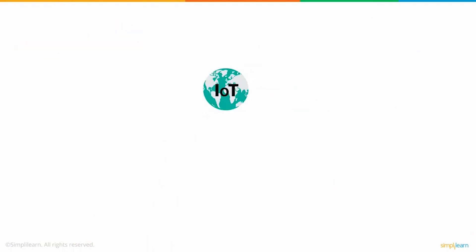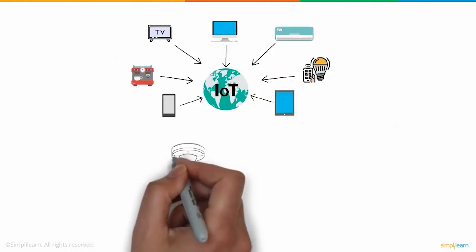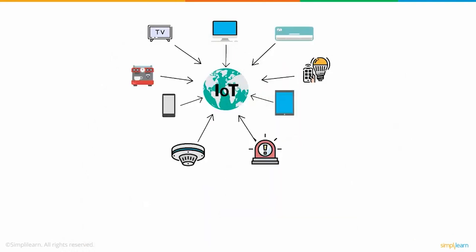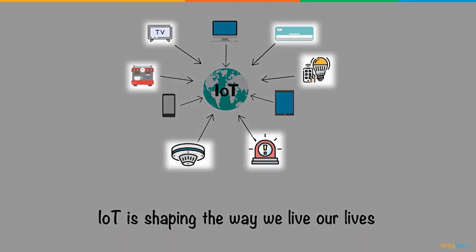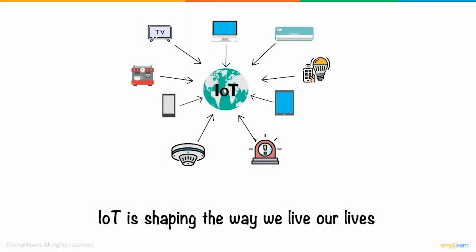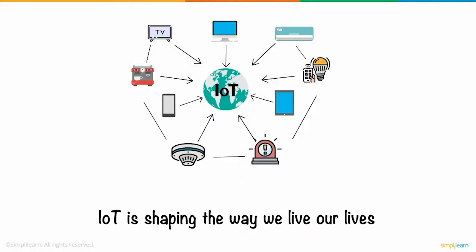Until recently, access to the internet was limited via devices like the desktop, tablet, or smartphone. But now, with IoT, practically all appliances can be connected to the internet and monitored remotely. IoT is shaping the way we live our lives and helps us get a better insight into the working of things around us. So what exactly is the Internet of Things? IoT is a system of interrelated devices connected to the internet to transfer and receive data from one to the other.